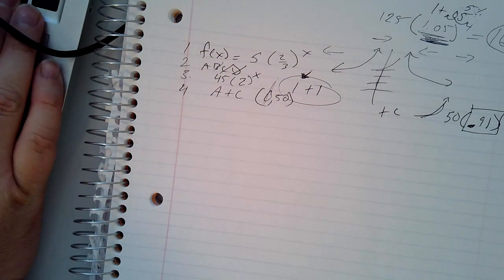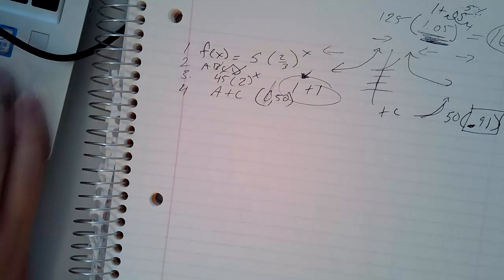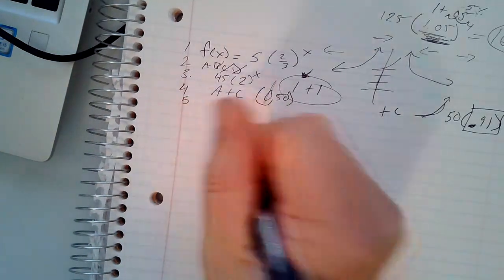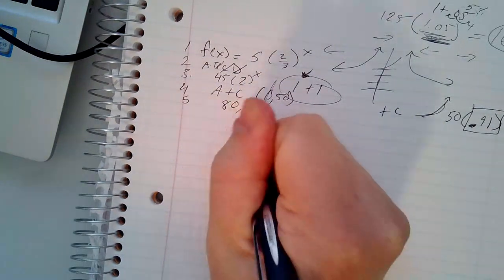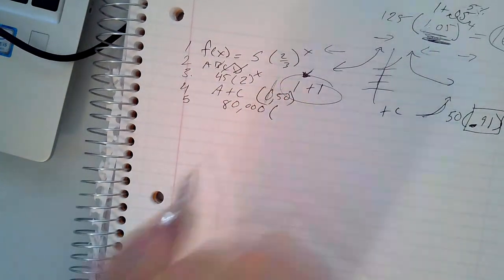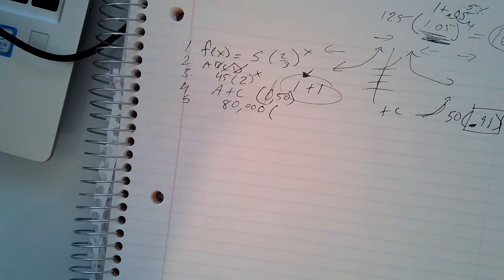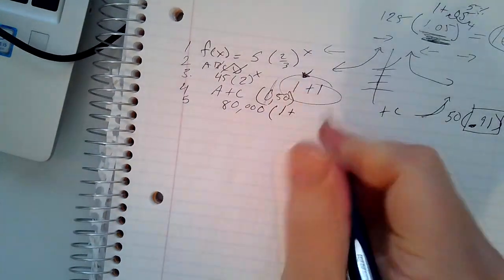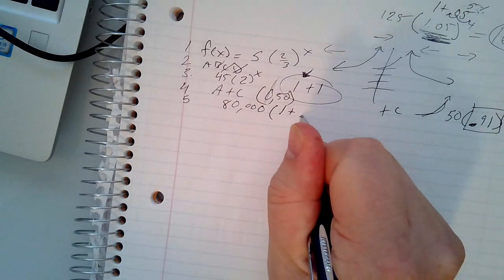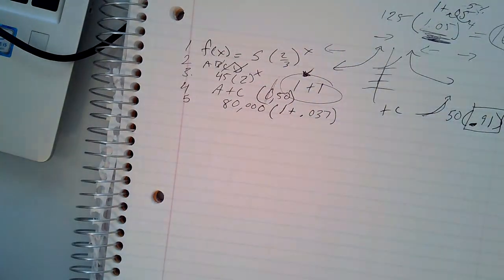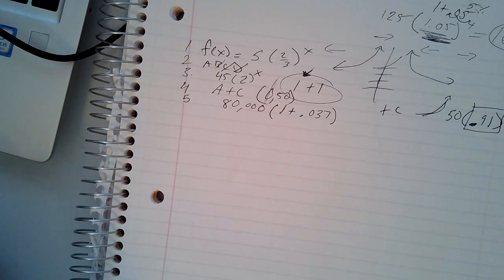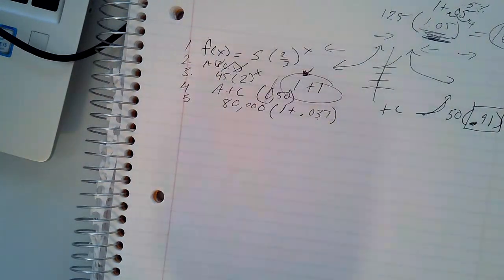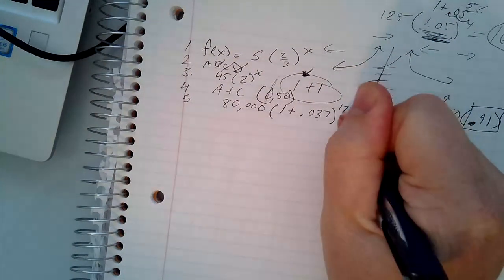Number five, a lot of y'all have questions about this one. It's probably because you didn't read it properly. Number five says that there are 80,000 subscribers originally, and it grows at 3.7% per month. So it grows, which is 1 plus. 3.7% would be 0.037 in decimal form. And it says how many subscribers will there be after a year? Well, it said per month is the growth. How many months are in a year? That would be to the power of 12.